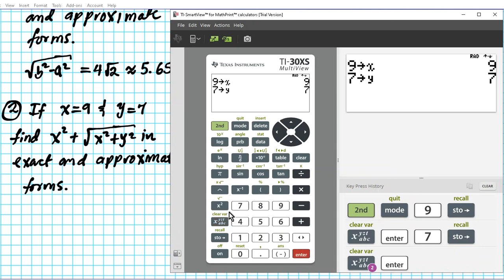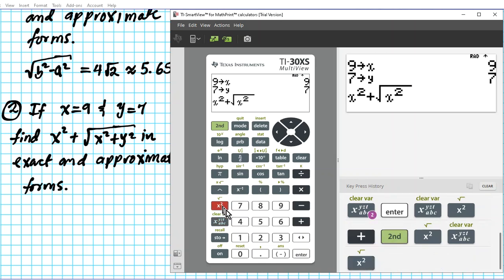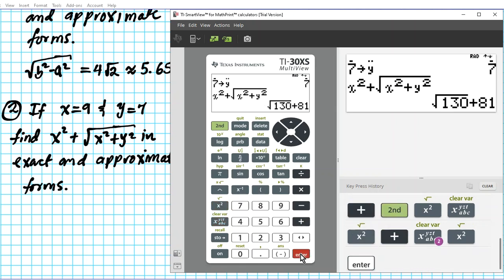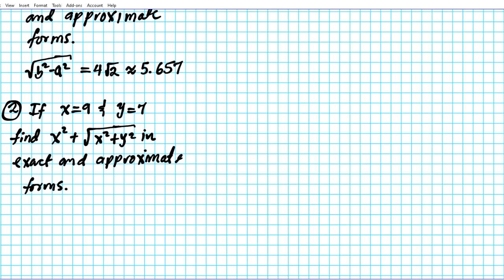Plus the square root of X raised to the second power plus one, two. That's Y raised to the second power. Enter. Your answer, ladies and gentlemen, in exact form is root 130 plus root 180. Let's put it in the format of the calculator. So X squared plus root X squared plus Y squared. Answer is root 130 plus 81. That's the exact answer. Okay.